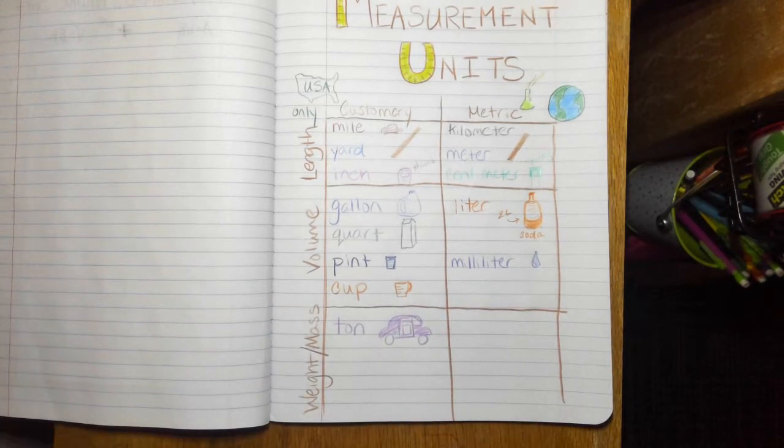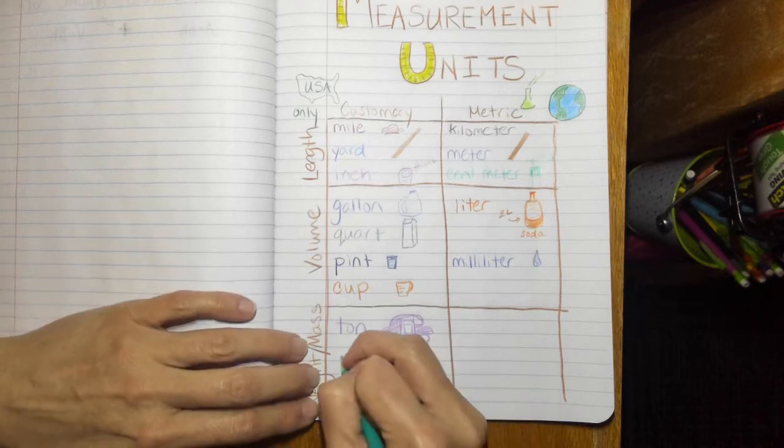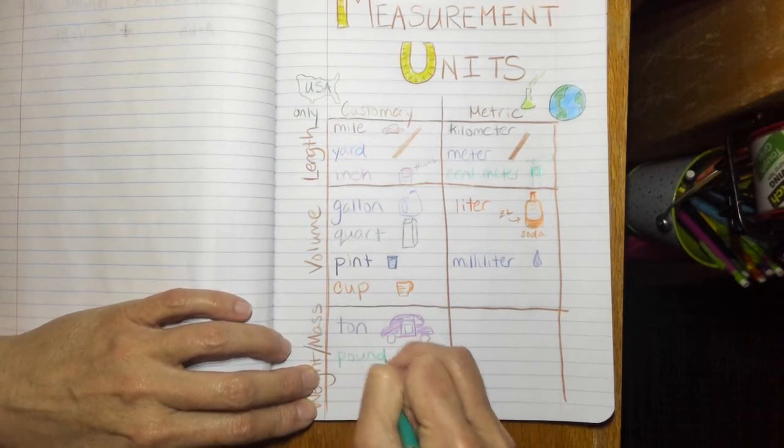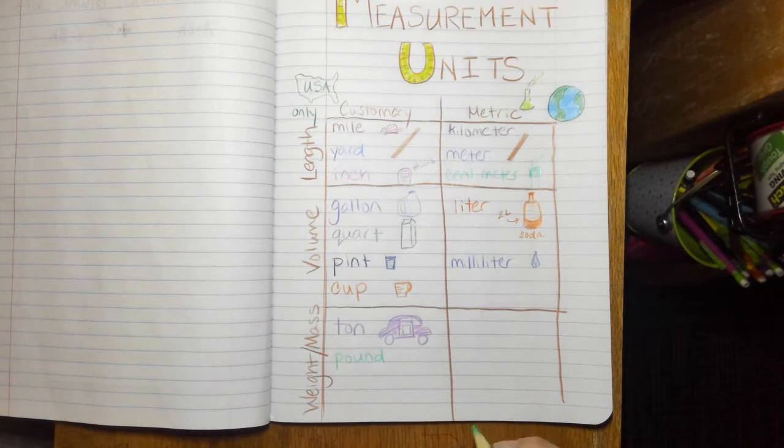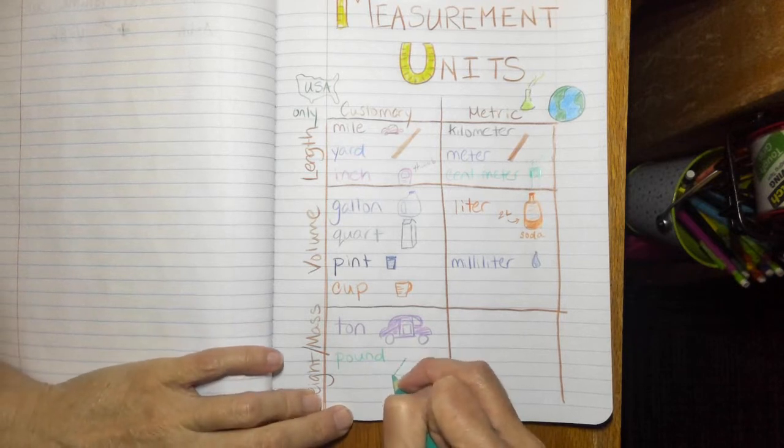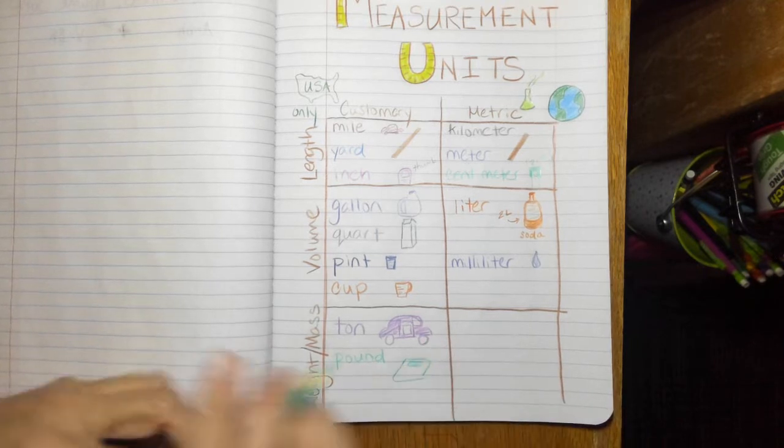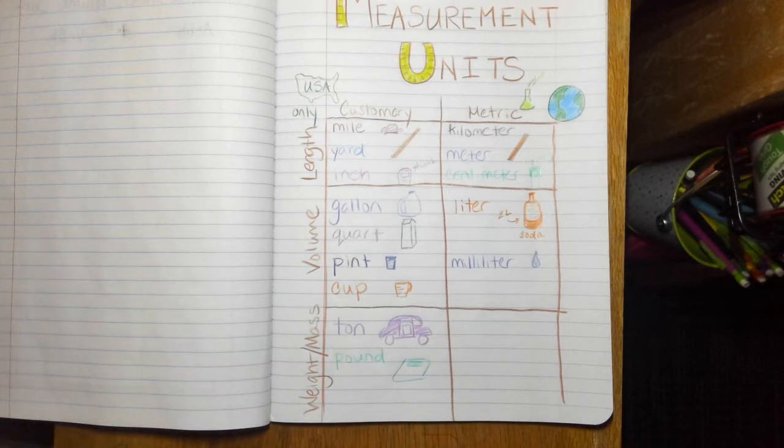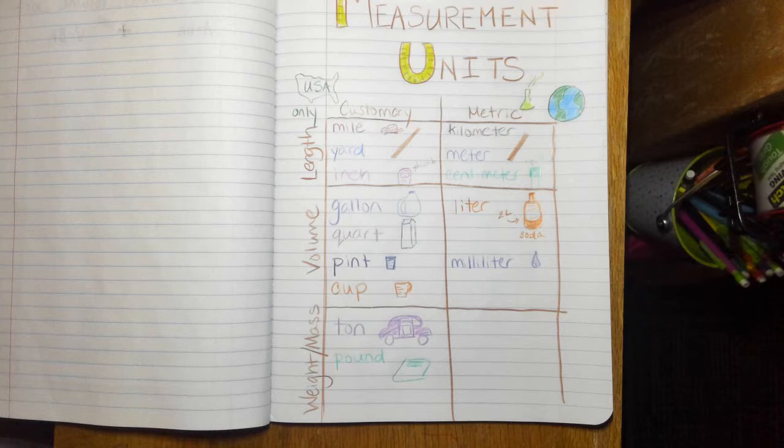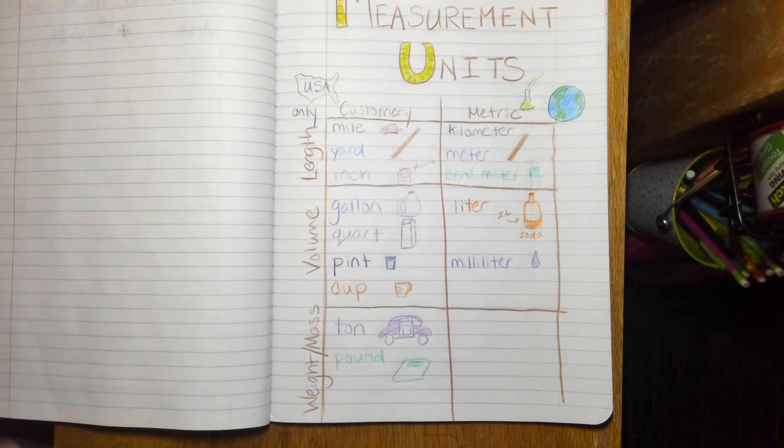And then the other customary unit of weight or mass is the pound. And a pound is like what you measure your weight in, right, so when you get on the scale at the doctor's office or at home. And things that weigh about a pound, like a bag of coffee beans might weigh a pound. You might buy a pound of flour, or actually most flour bags are like a five pound bag. So a pound is significantly lighter than a ton but it's not nothing.